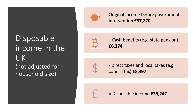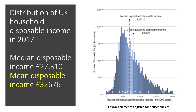Of course, some households are bigger than others and may have one, two, or possibly three earners. So we do what's called equivalization — we make an adjustment to the data for household size. If we do that, this is the distribution pattern that emerges, again for 2017.